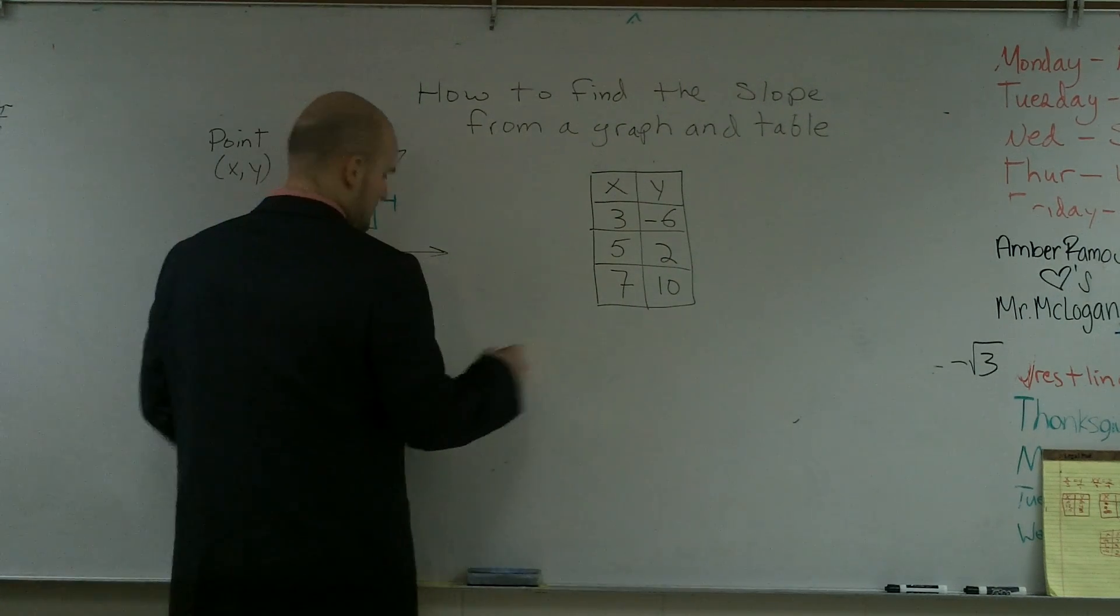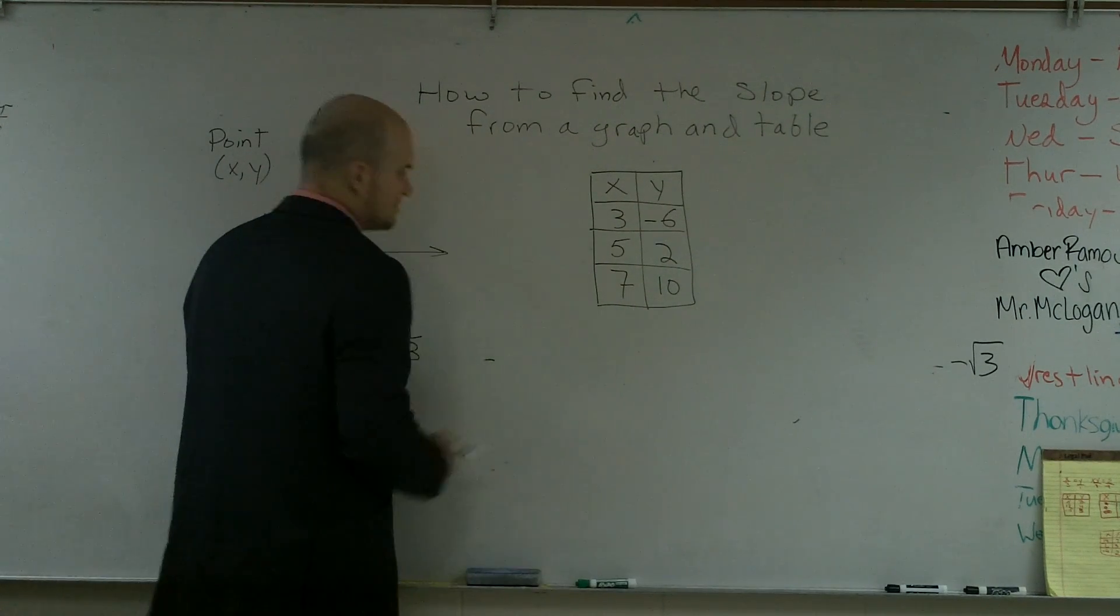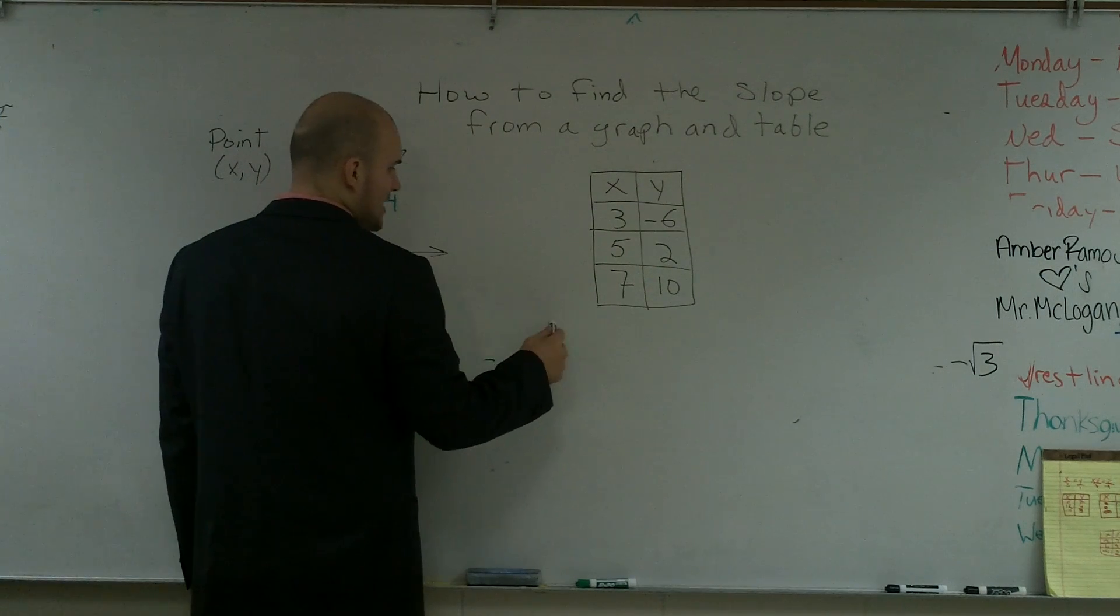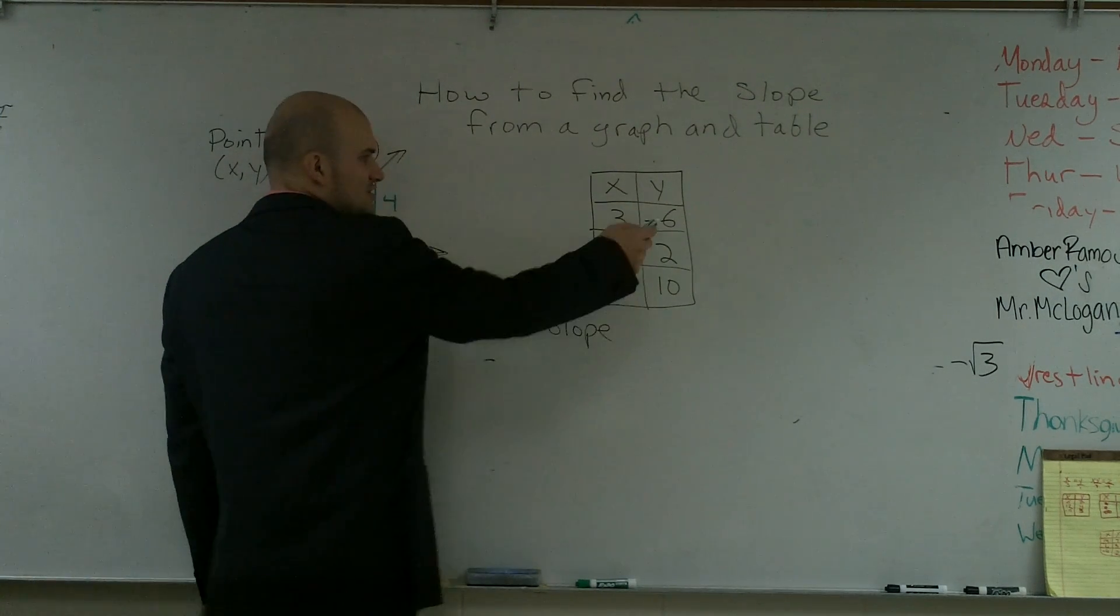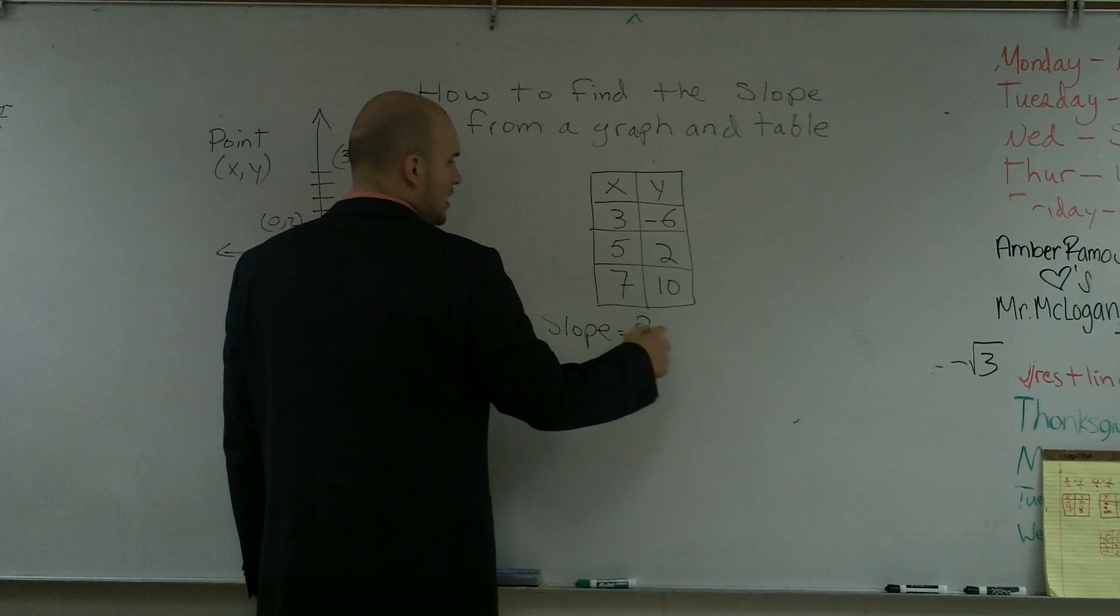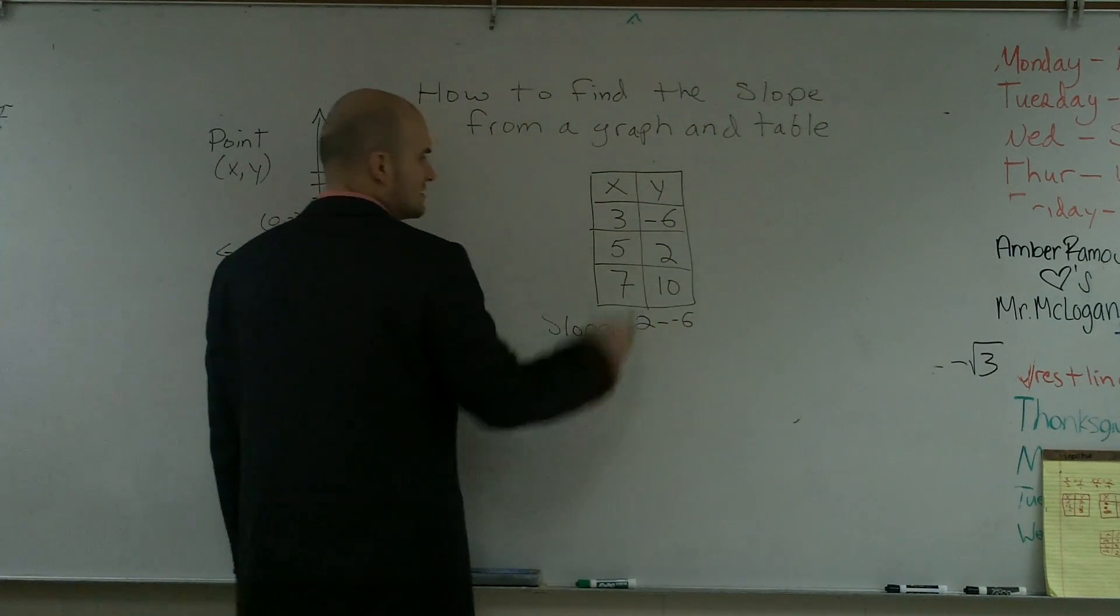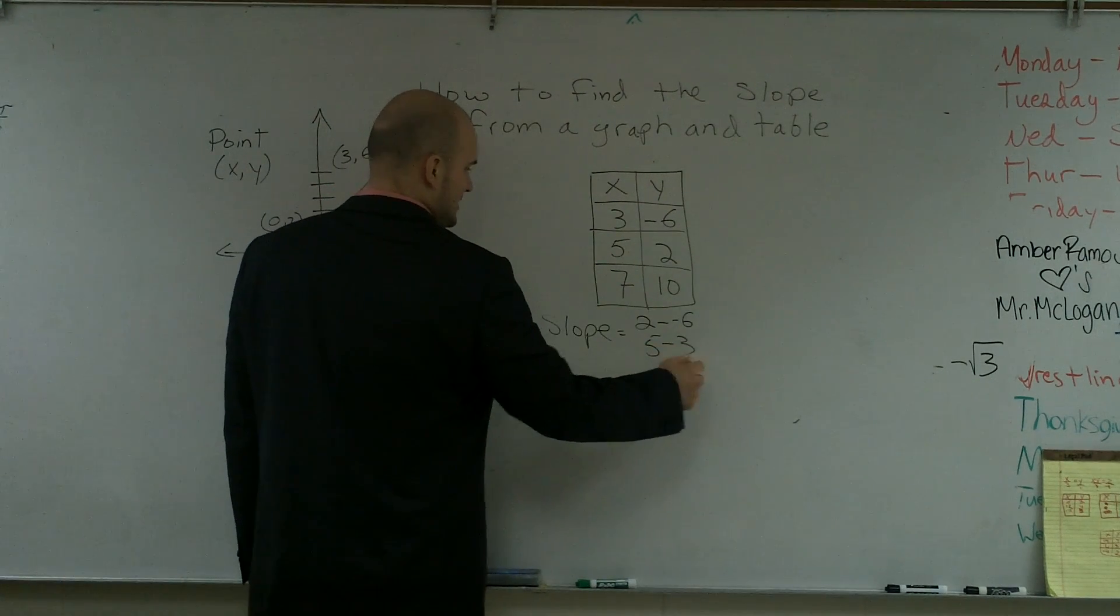To find the change between the two y values, I can say the slope is the change in the value. So from here to here, what was the change? I'll do 2 minus a negative 6 and then 5 minus 3.